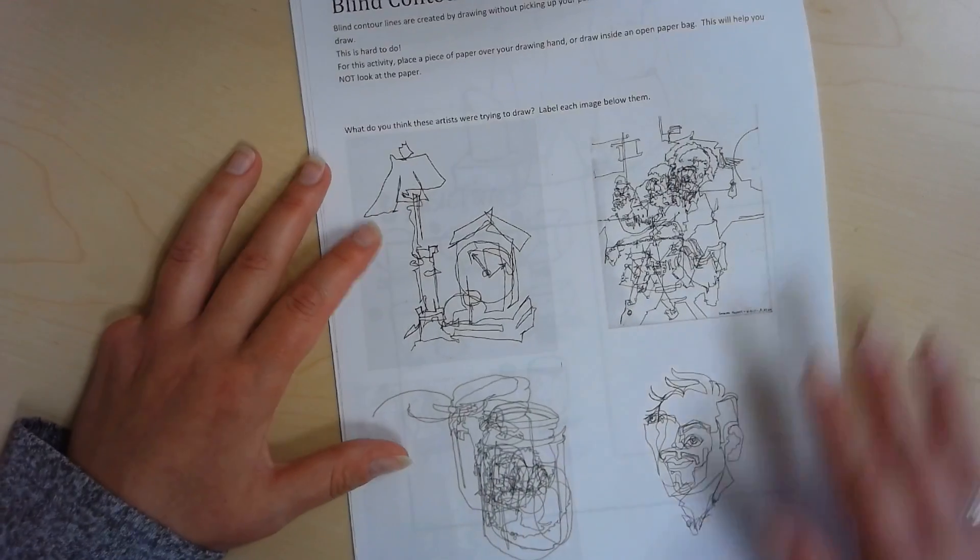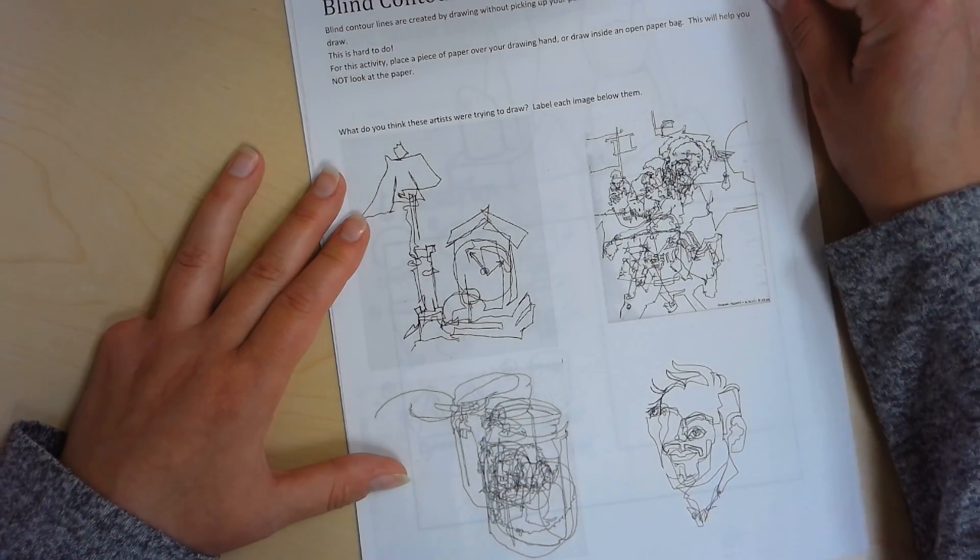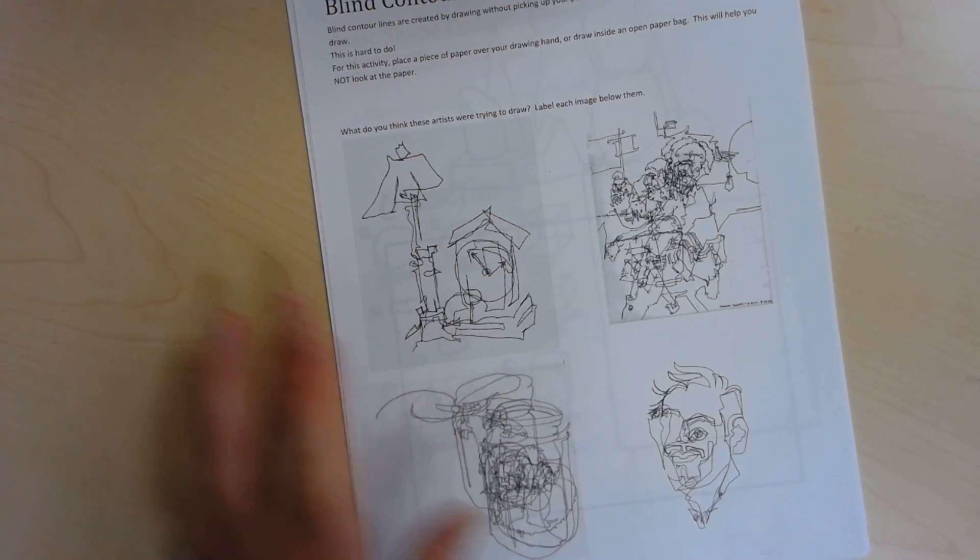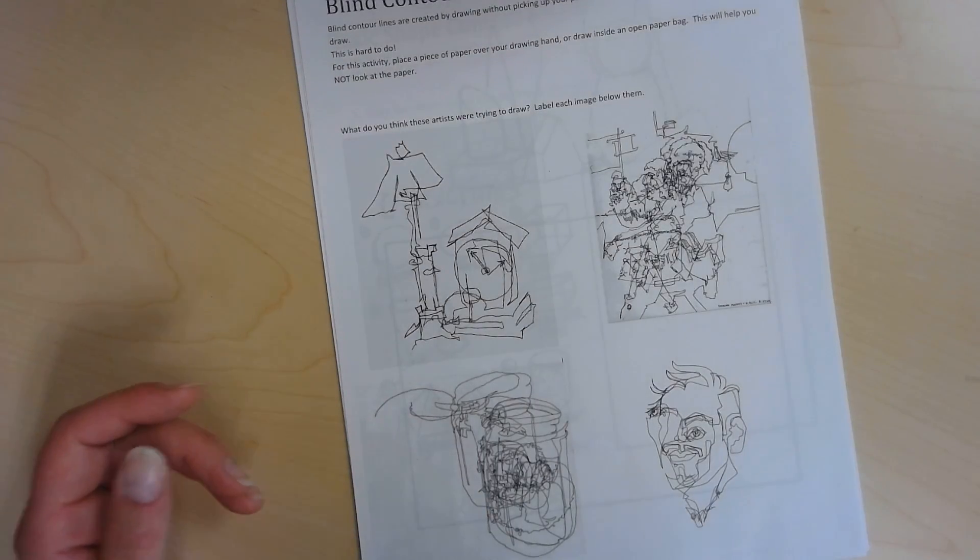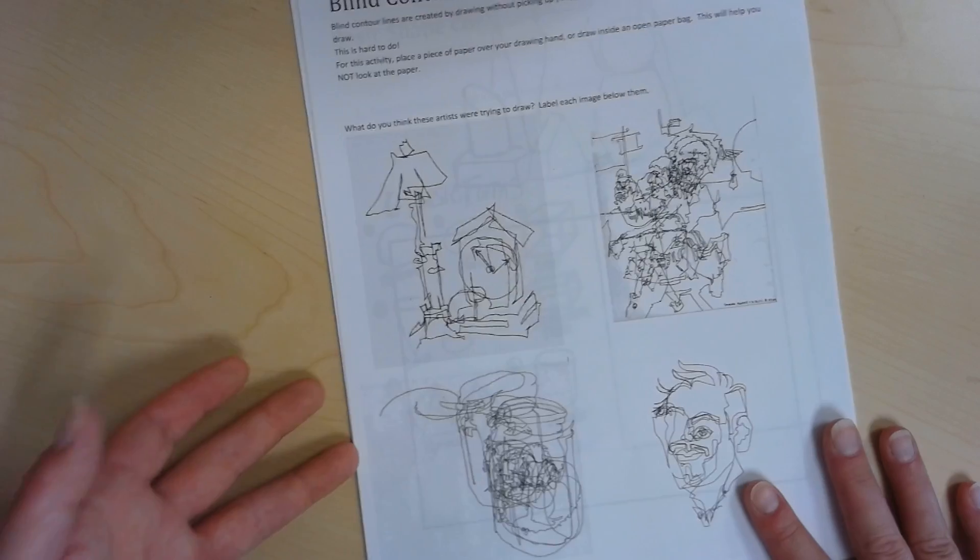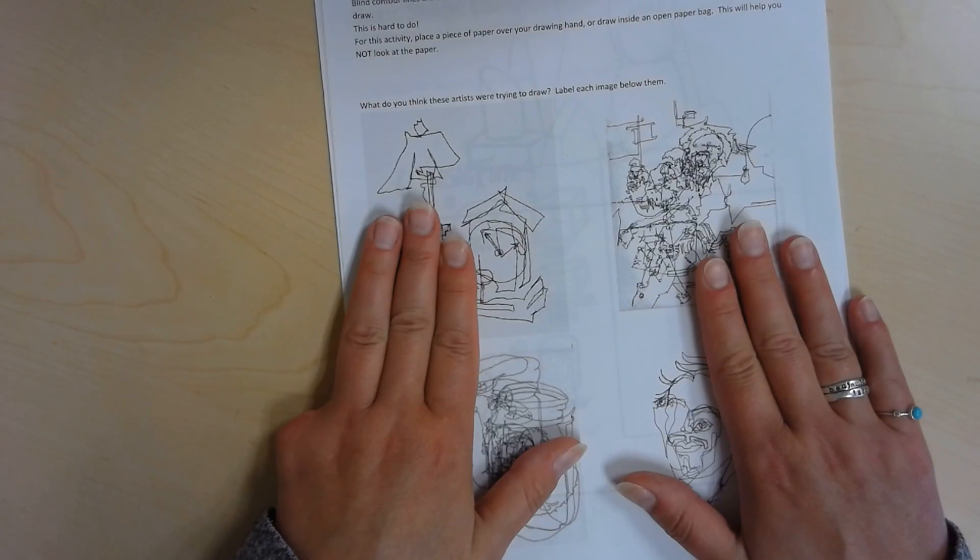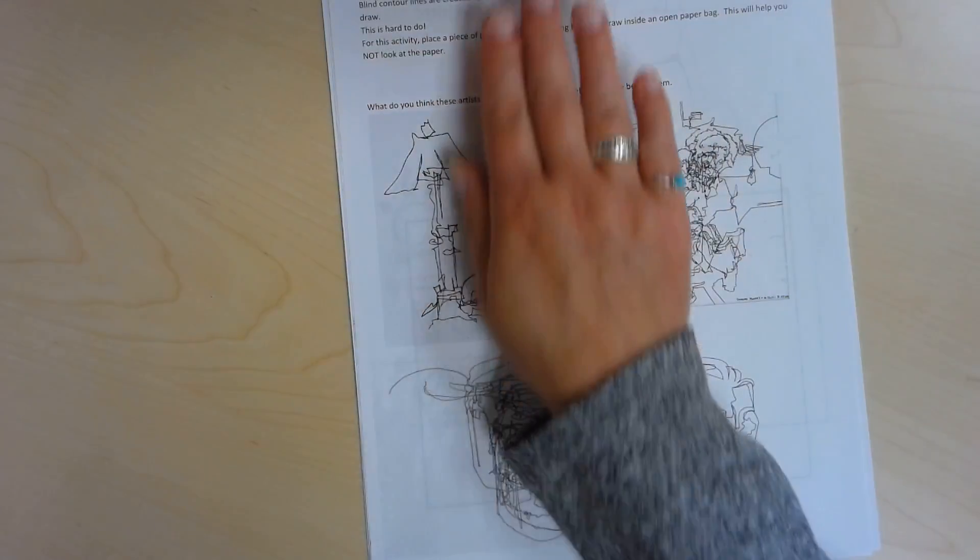There are some examples of blind contour drawings, and these artists created them just without looking at their paper. But if you have a problem doing that without looking, then I suggest taking a piece of blank paper and putting your hand underneath it so you can't see what you're drawing. The other way is to use a paper bag and open the bag up, put your paper inside that you're drawing on, and then put your hand inside so you cannot see.